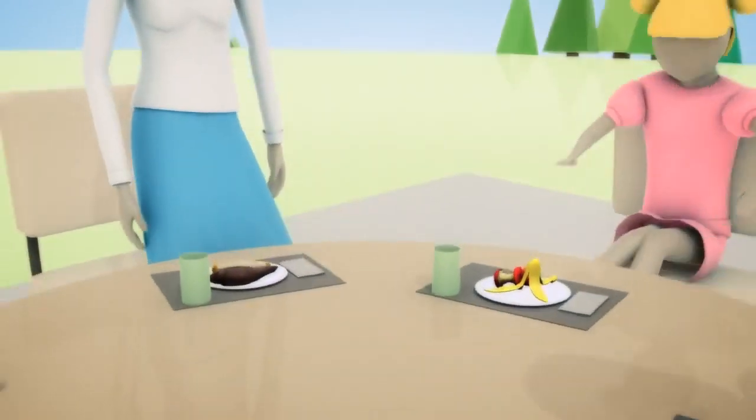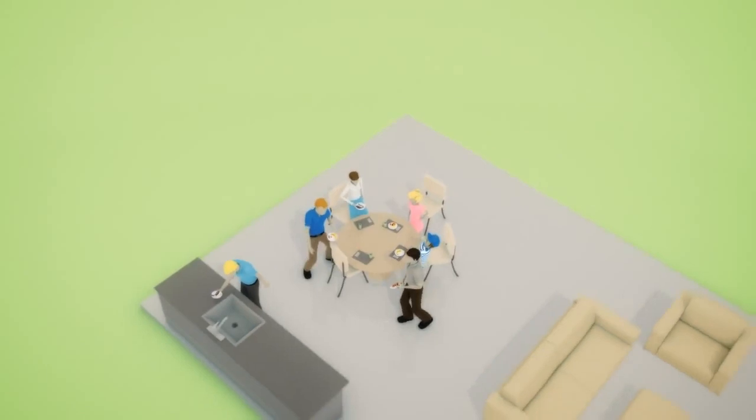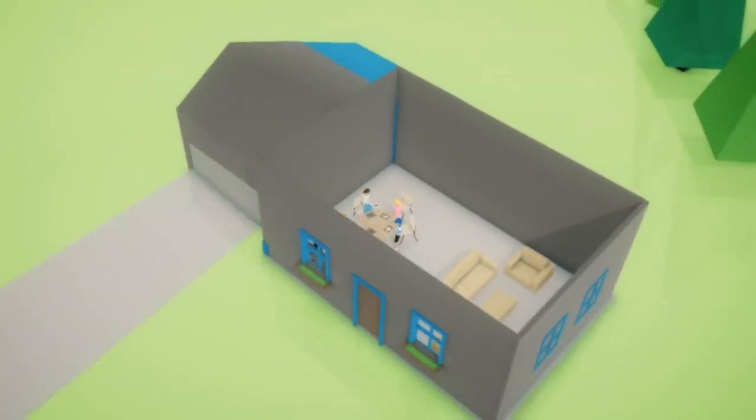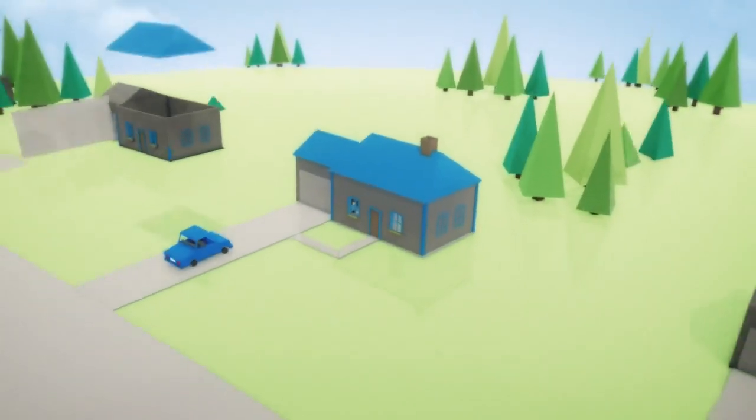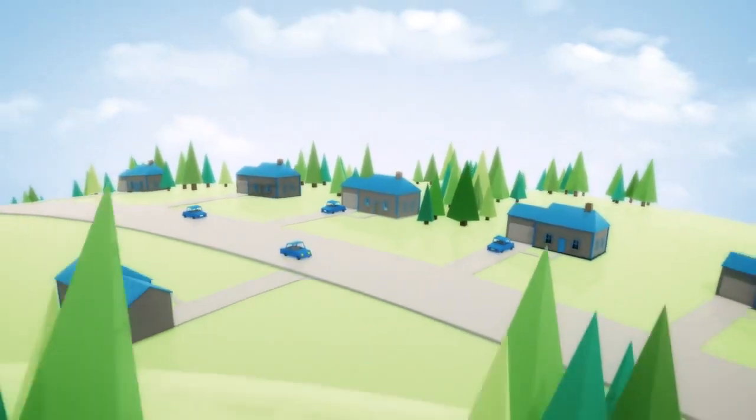By rethinking the way we dispose of something as simple as an orange peel, Emerson engineers are helping to turn food waste into energy in communities across the globe. It's a big idea and it all starts at the kitchen sink.